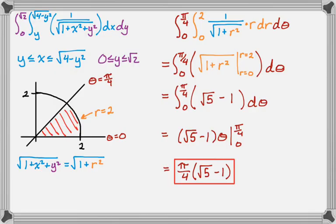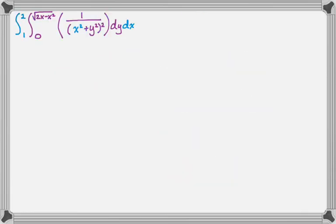And kind of fortunately, no trig showed up, because we had constant bounds, which is always a blessing. So let's look at another one where that won't happen. So now I've got 1 to 2, 0 to the radical 2x minus x squared, which maybe you're not familiar with, of 1 over the quantity x squared plus y squared, which is definitely just r squared, squared, and then dy dx.